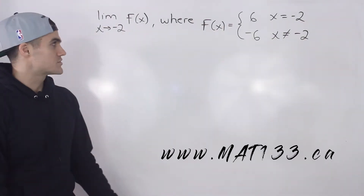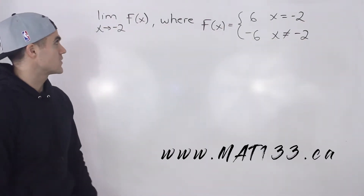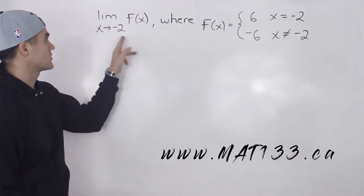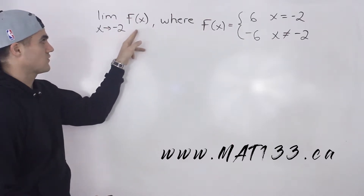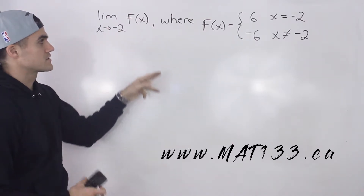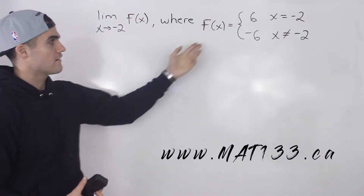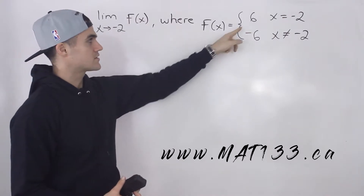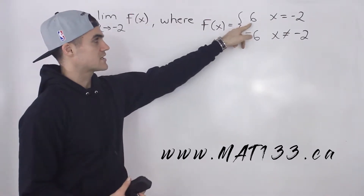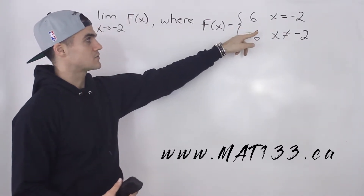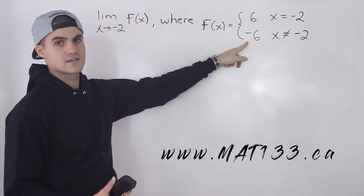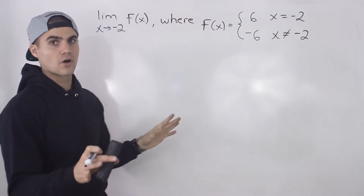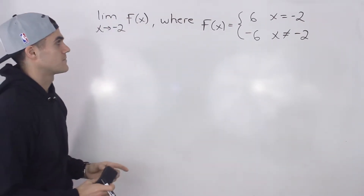Welcome back, everybody. Moving on to the next question, we have another limit to deal with. The limit as x approaches negative 2 of f of x, where f of x is this piecewise function. It's equal to 6 when x is equal to negative 2, and it's equal to negative 6 for all other x values.